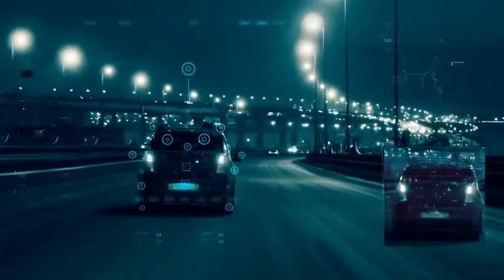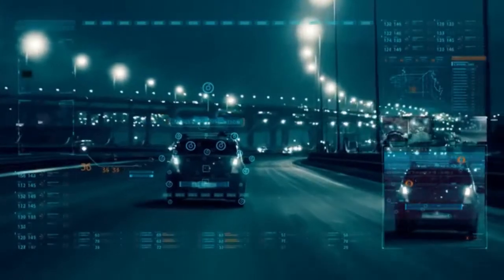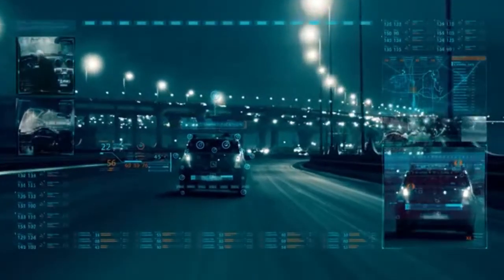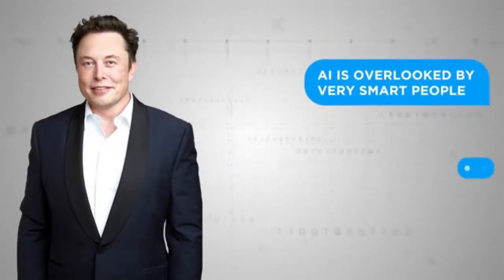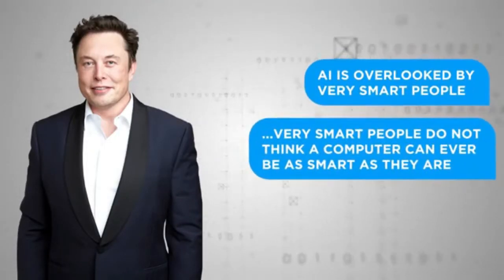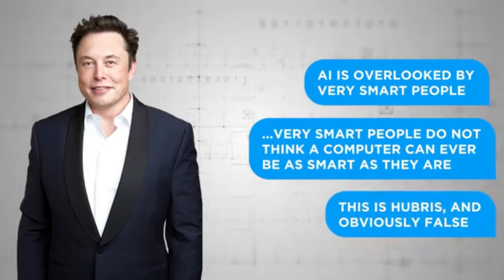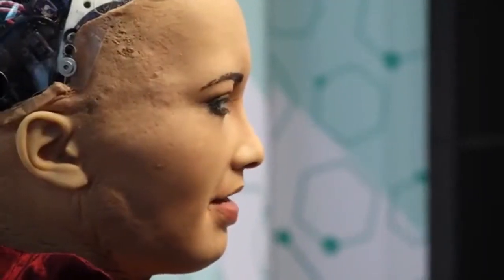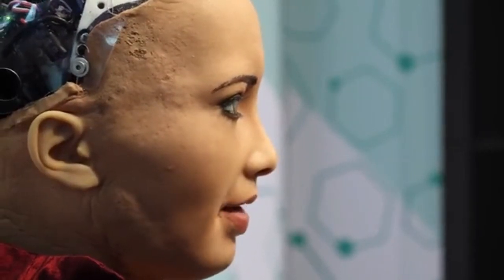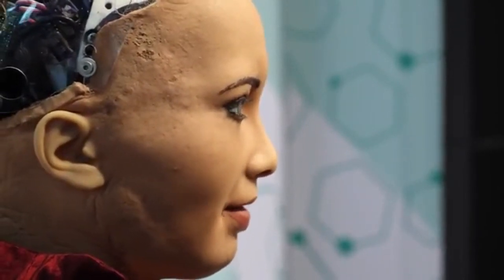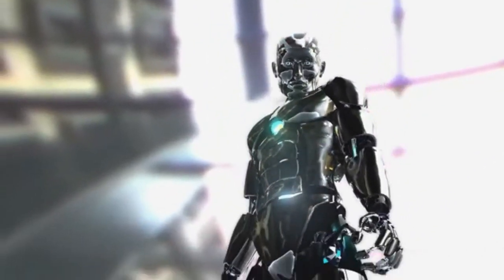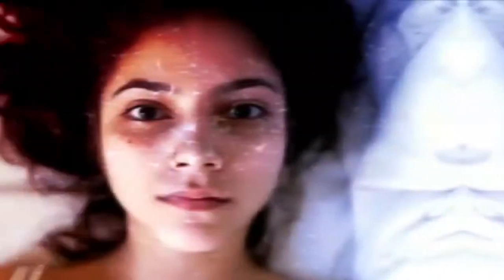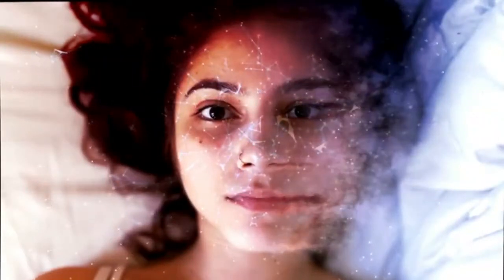The first thing you should know is that tech colossus Elon Musk is terrified about the rise of AI, or artificial intelligence. AI is overlooked by very smart people, he's said before. That's because very smart people do not think a computer can ever be as smart as they are. This is hubris, and obviously false. Musk's chief worry is that, left unchecked, artificial intelligence will rapidly evolve beyond humanity's ability to manage and regulate it. Then at some unknowable moment, human beings will become a mere nuisance to it, and it will dispose of us without hesitation or remorse.